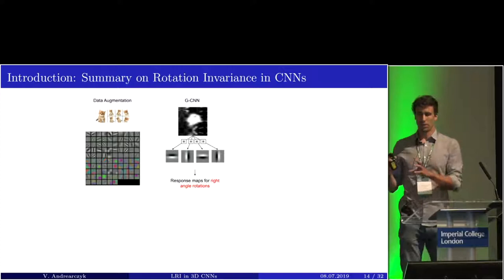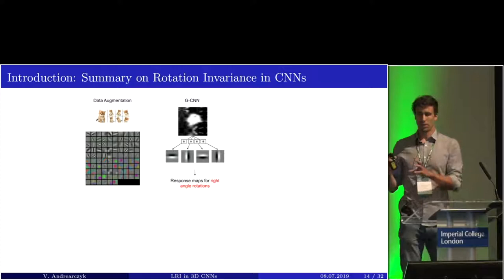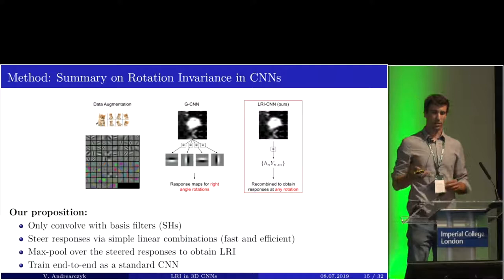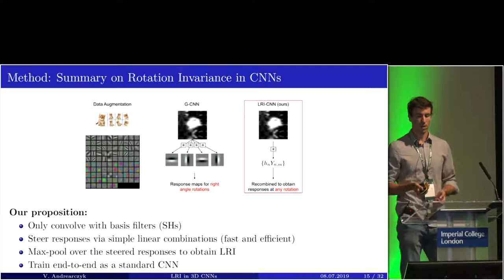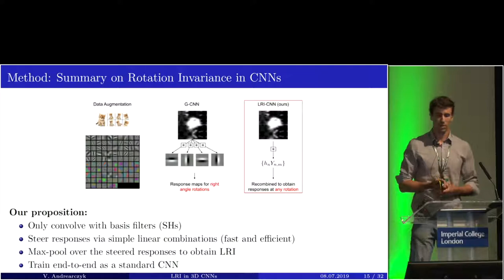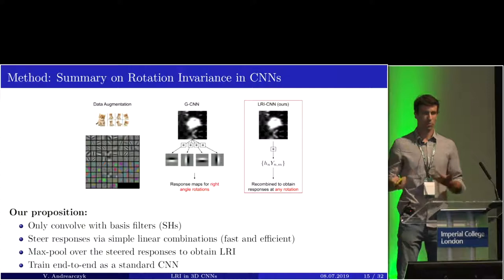As a summary, we have the possibility of data augmentation, group equivariant CNN by rotating kernels, and what we propose: a locally rotation invariant CNN. We will only convolve the inputs with basis filters — the spherical harmonics — then steer the responses by a simple linear combination that is fast and efficient, use max pooling over the steered responses to obtain local rotation invariants, and train it as a standard CNN.